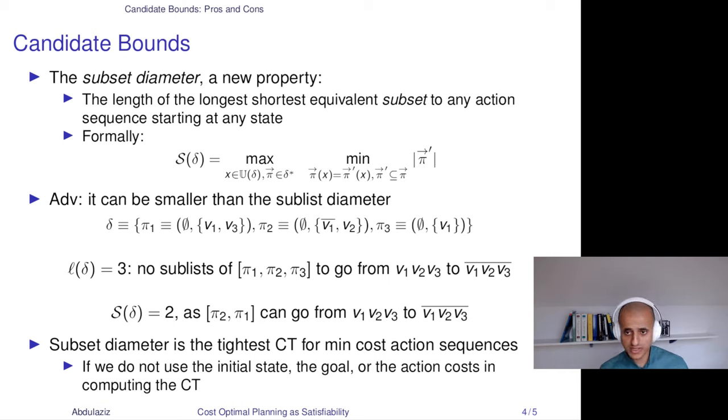The sublist diameter sounds somewhat promising because of its computational advantages and also that it is a CT. But is there something that is even tighter or better than it? In this slide, I will introduce the subset diameter, which is a new property that I have defined in this work. It is the length of the longest shortest equivalent subset, not sublist. So look at this. This is the main difference. For the same system that we discussed from last slide, if you have the sublist diameter for it as three because there isn't any sublist of that that can reach the same state from that state, for that system, the subset diameter is in fact two because there is a subset of that action sequence that can reach this state from that state. And that subset is pi two, pi one. Basically, the power of the subset diameter is that it allows you to reorder actions. So it's not just sublists, but it's permutations of sublists. Also, I've shown in this work that not only that the subset diameter is a CT, but that it is indeed the tightest CT that you can compute if you don't consider the initial state or the goal state.